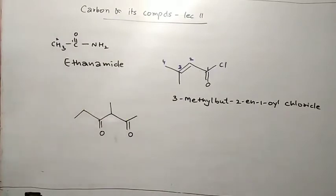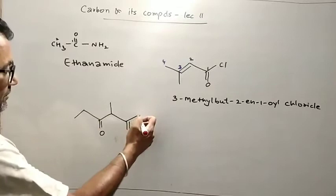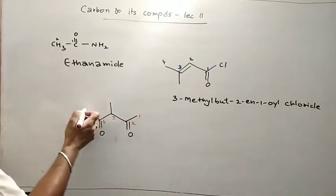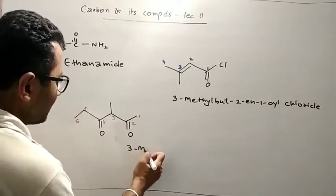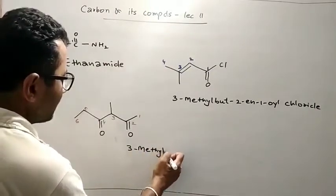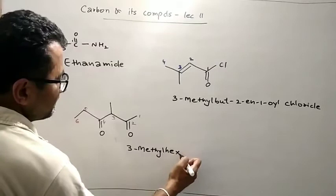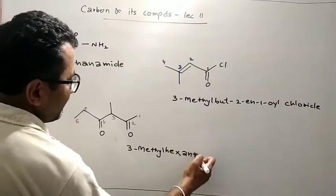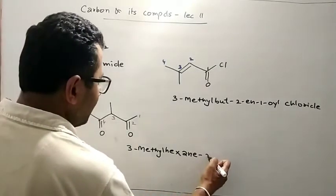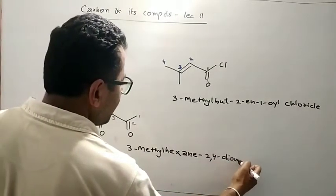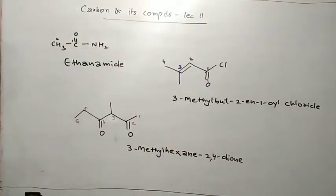If we have two C=O groups, we will give the numbering according to sum of locants. So there is 3-methyl, total carbon 6, hexane. When there is dione, you write the A. So hexane-2,4-dione. If it is one, you will not write E. If it is dione, you will write E.